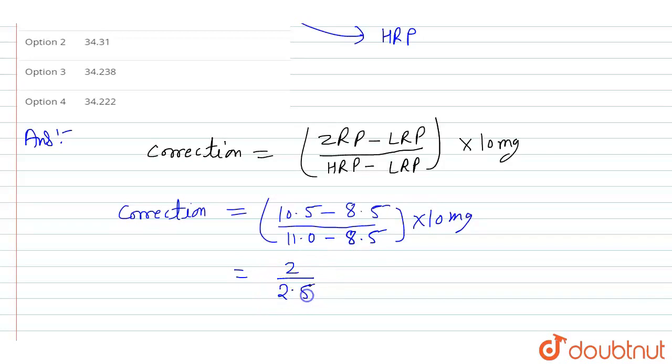2 divided by 2.5 into 10 milligrams. You can cancel and get 2 into 4, that's 8 milligrams. One gram is equal to 1000 milligrams, so one milligram is...